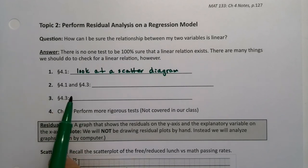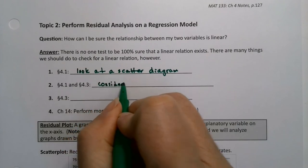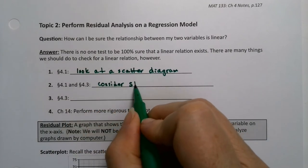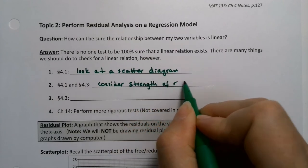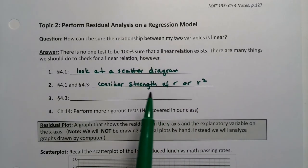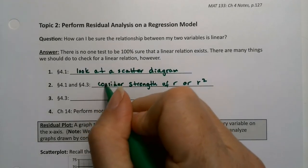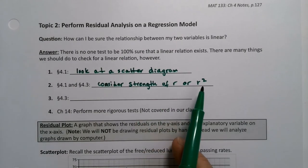In 4.1 and 4.3, we consider the strength from 4.1 of R, and from 4.3, R squared. Either one or both. So you'll consider the strength of those values, your correlation coefficient or your coefficient of determination.